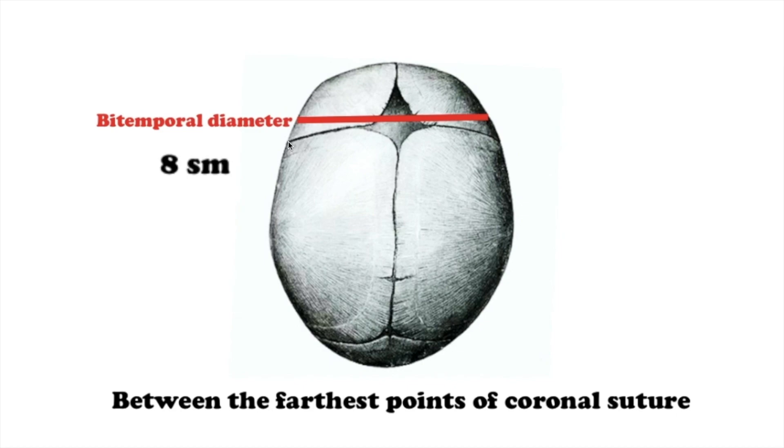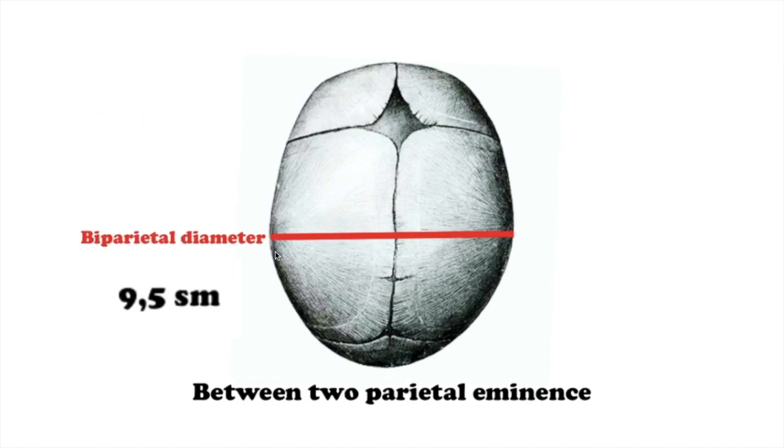The small transversal dimension or bi-temporal dimension, diameter temporalis, is measured between the most distant points of the coronal suture, equals 8 cm. The large transversal dimension or bi-parietal dimension, diameter parietalis, is measured between the most distant points of parietal protuberance, equals 9.5 cm.